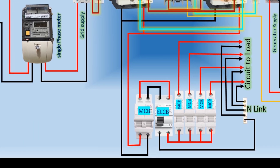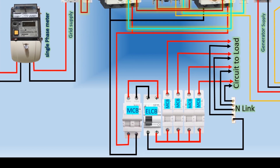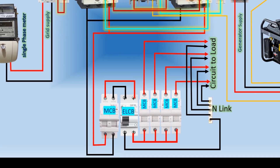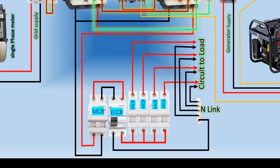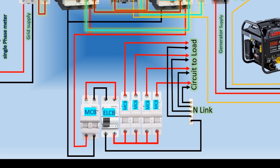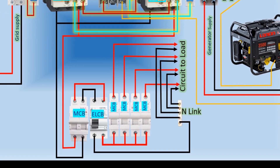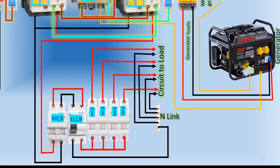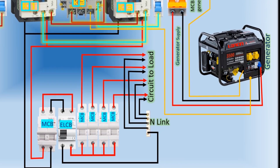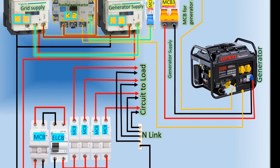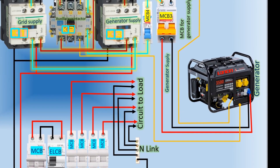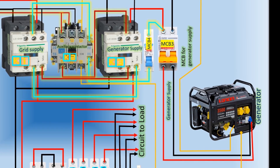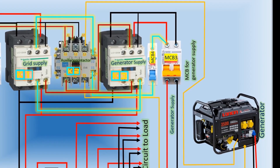An automatic changeover switch, ATS, is an electrical device designed to ensure uninterrupted power supply to a load by automatically switching between two power sources. It is commonly used when a backup power source, such as a generator or an alternative power grid, is available to maintain continuous operation during a power failure. The ATS is typically installed in electrical distribution systems and acts as a gateway between the main power supply and the backup power source. It constantly monitors the availability of the main power supply.